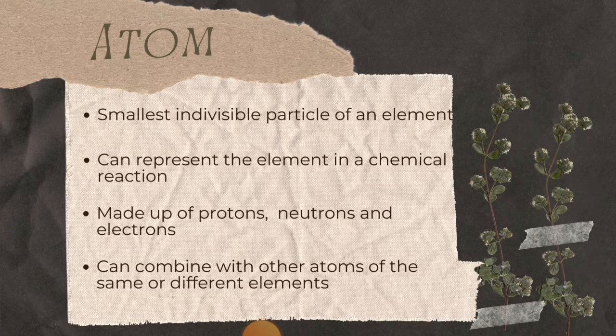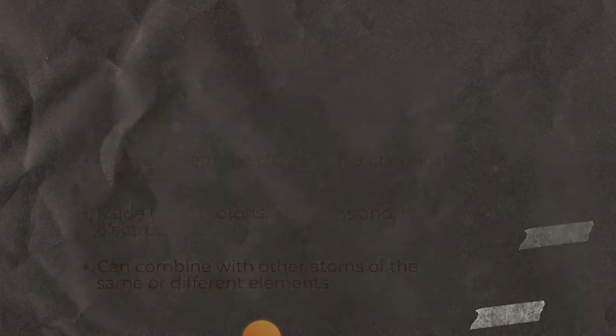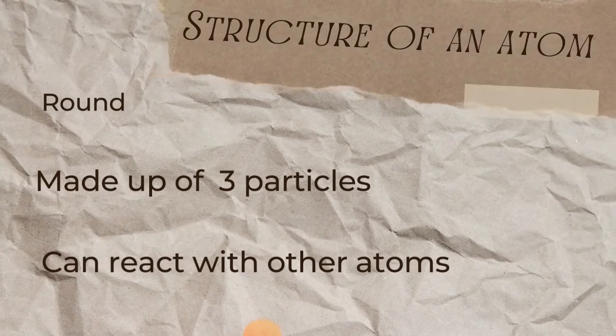They are made up of protons, neutrons, and electrons. These are the particles that make up an atom. And they can combine with other atoms of the same or different elements. When they combine with atoms of the same elements, they form molecules. But when they combine with atoms of different elements, they form compounds.